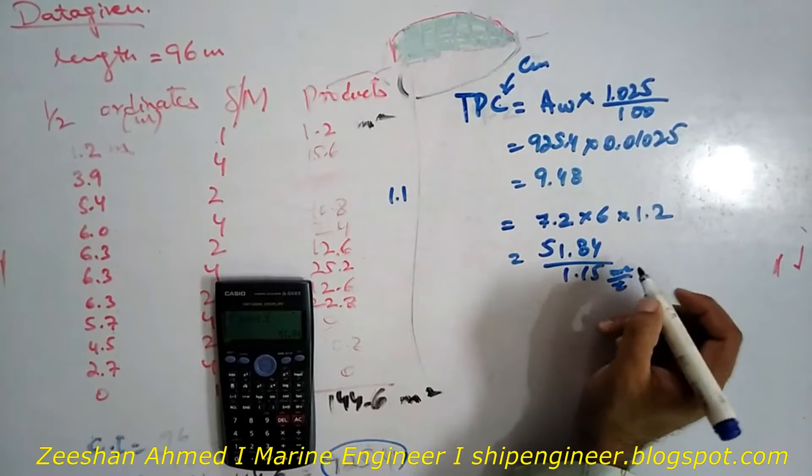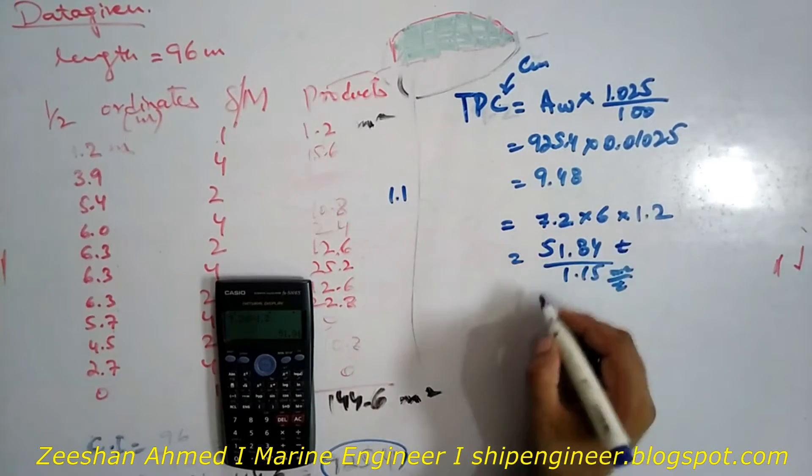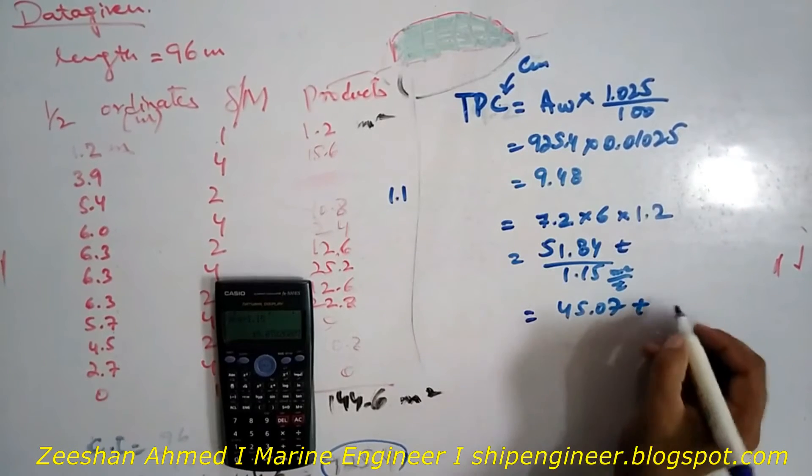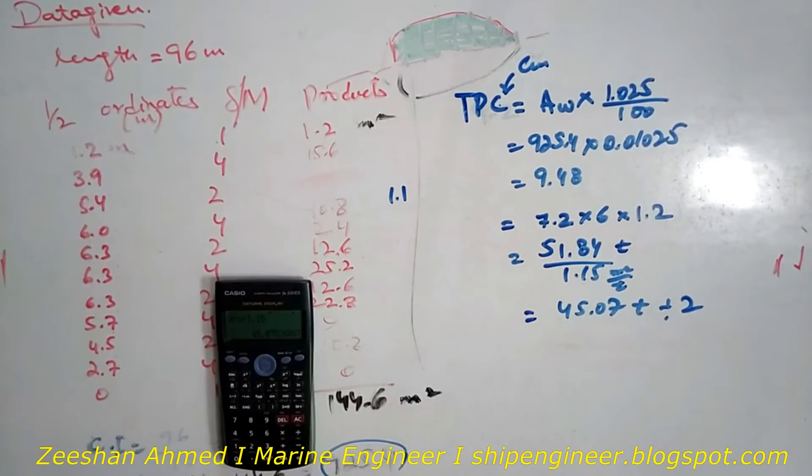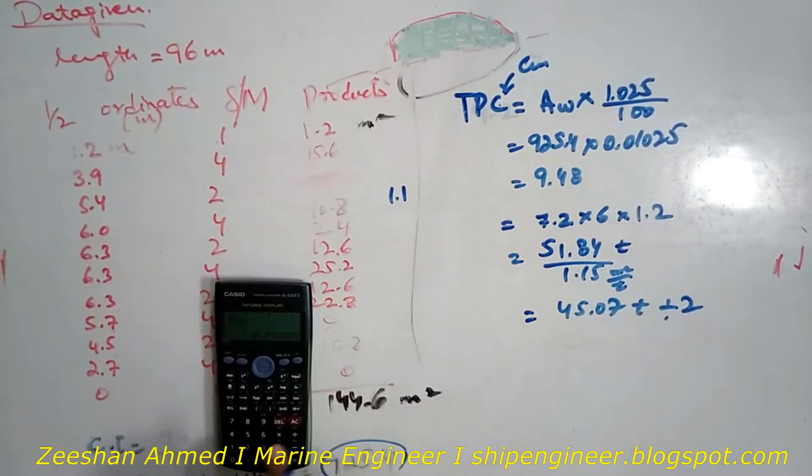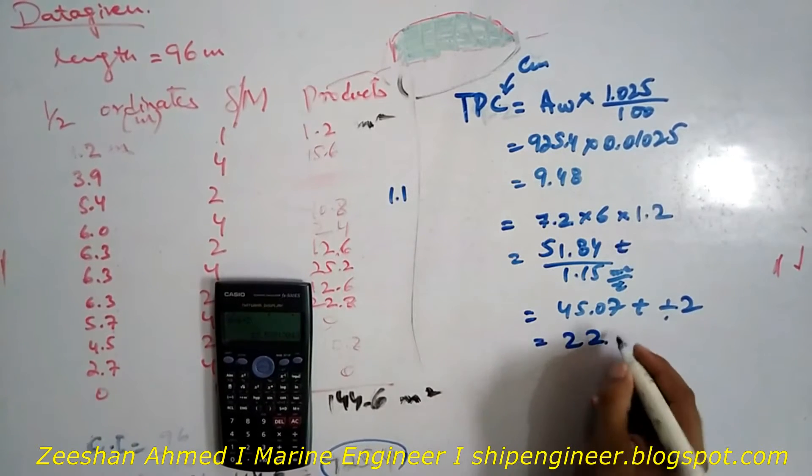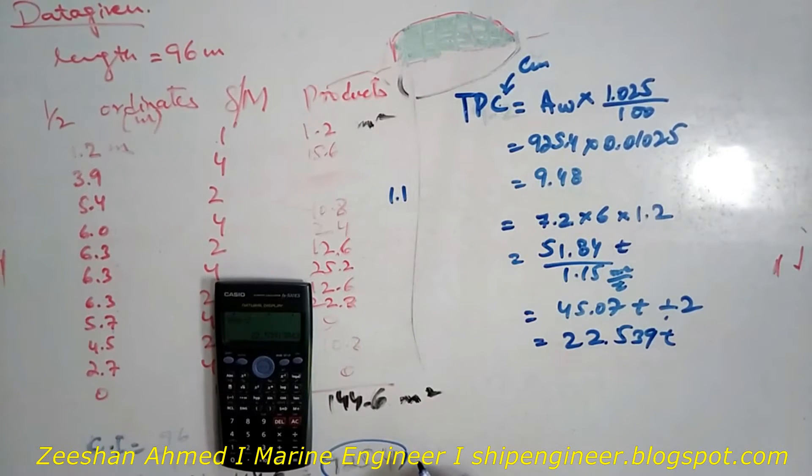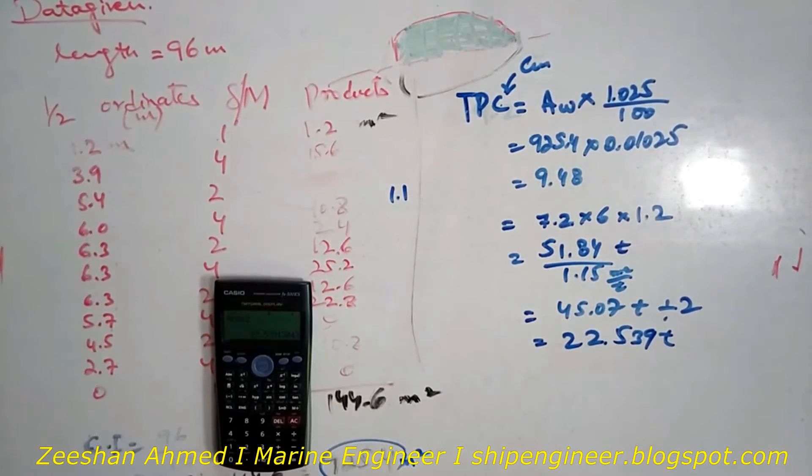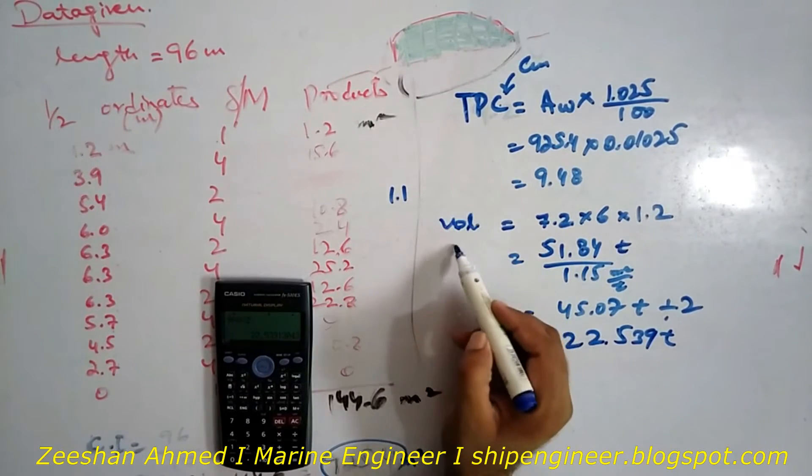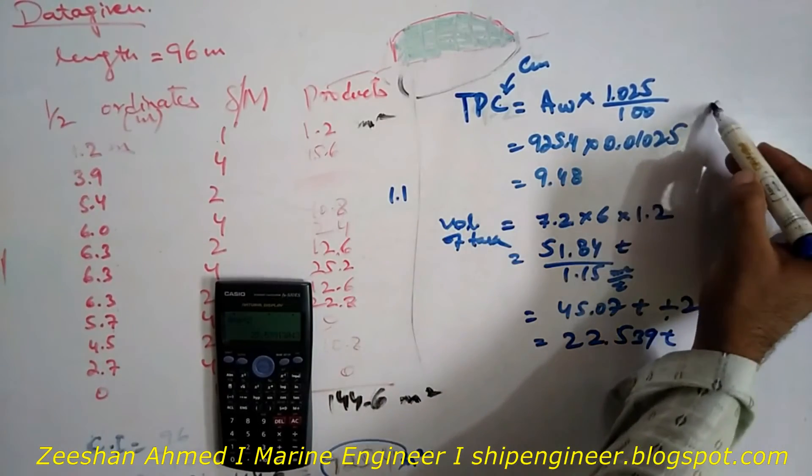This gives us 51.84 cubic meters times 1.15 tons per cubic meter. It will give us the value in tons. We have to calculate the draft when the sounding in the tank is half, so we will divide it by 2. This gives us 22.539 tons. This is the volume of the tank.